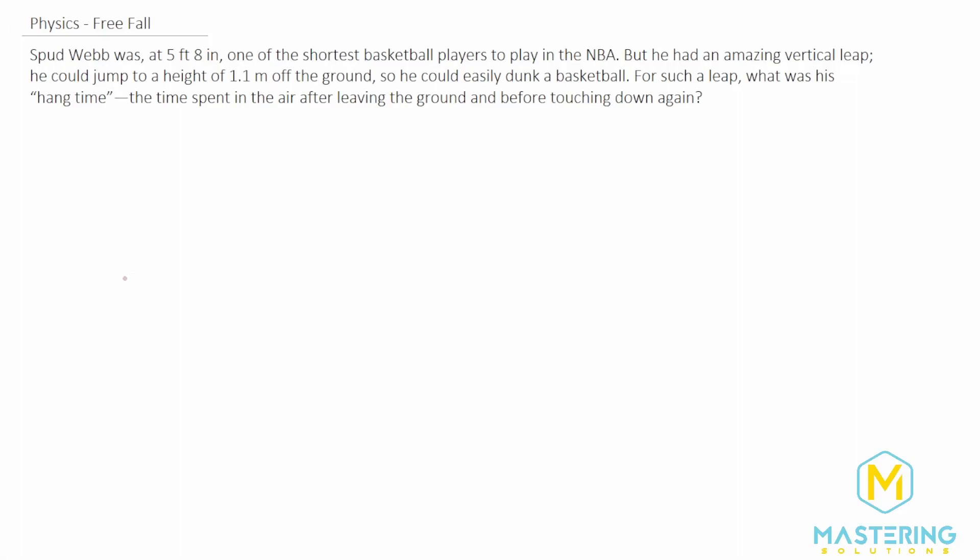Welcome to Mastering Solutions. In this free fall question, they tell us that Spud Webb was 5'8" tall, that he was really short, but he could jump really high, 1.1 meters off the ground for his vertical jump, so he's able to dunk the basketball still.